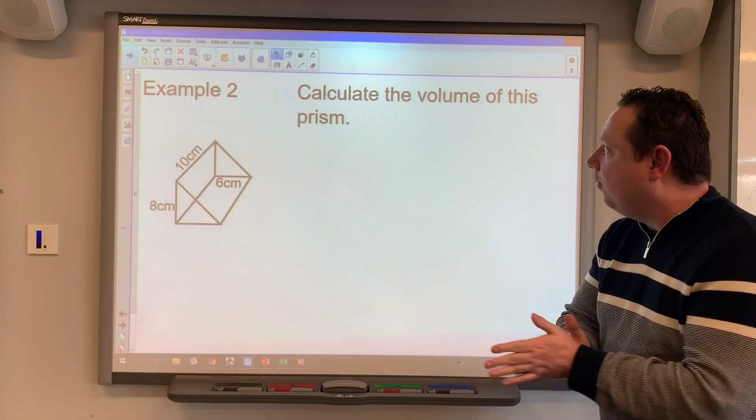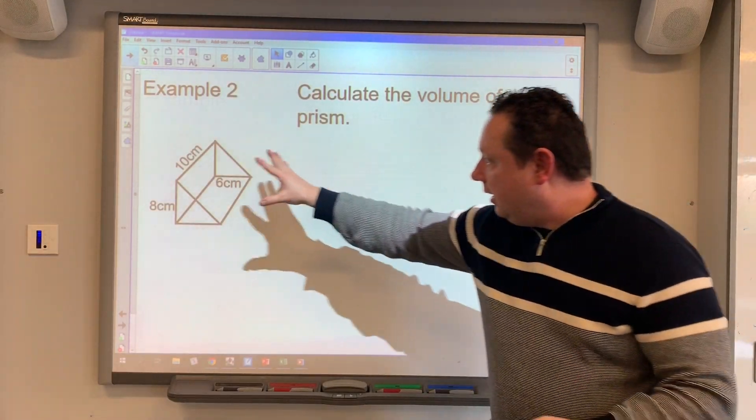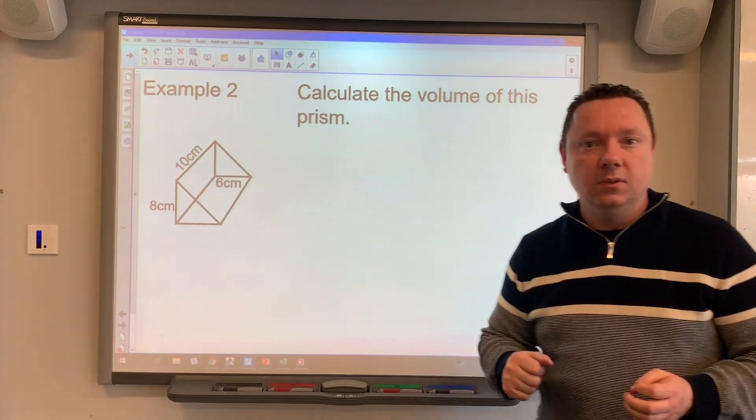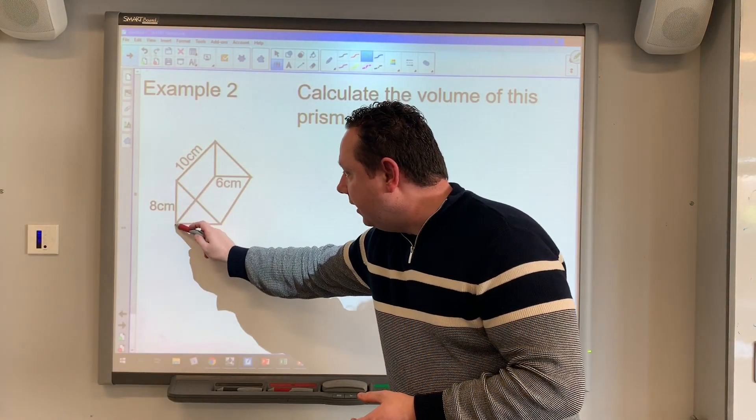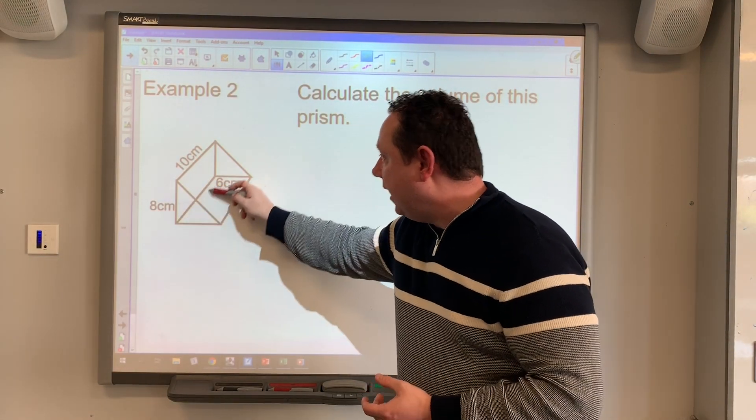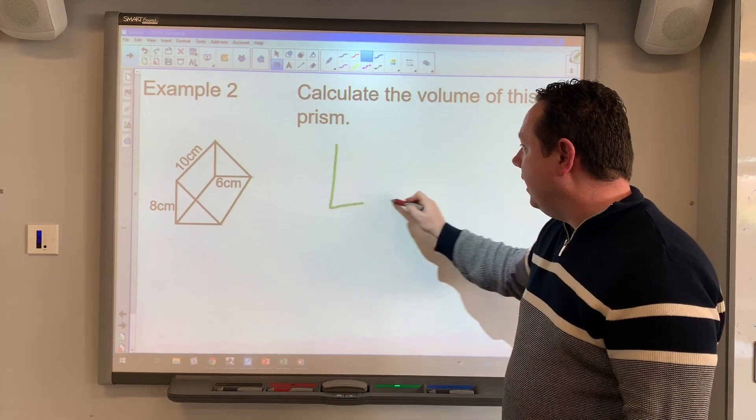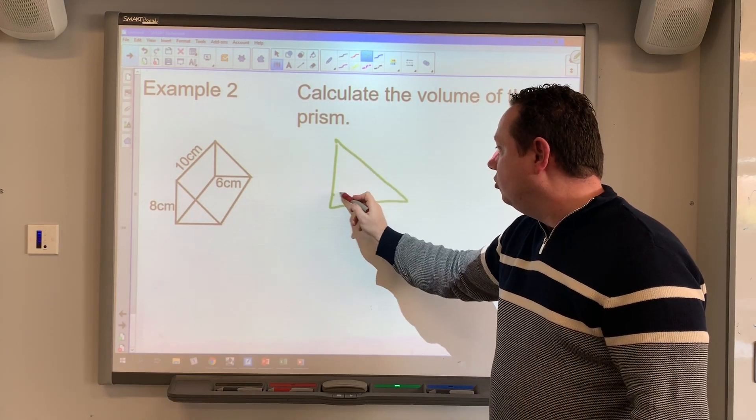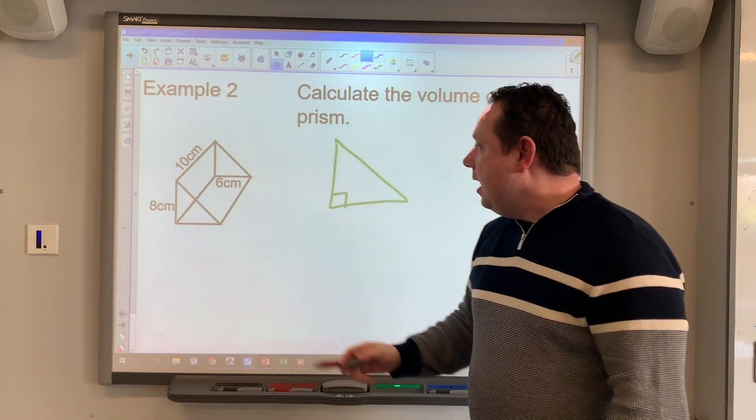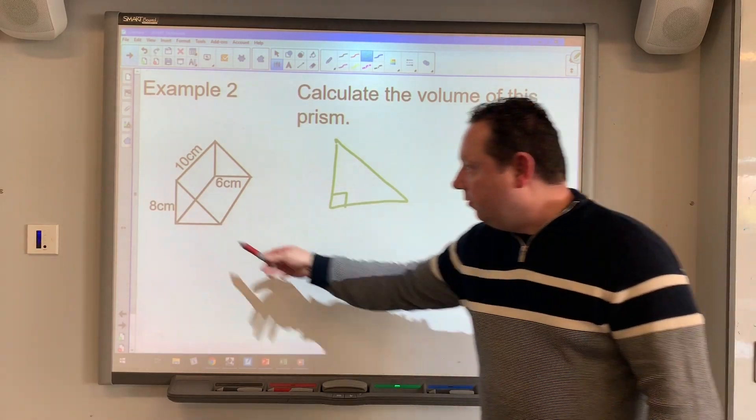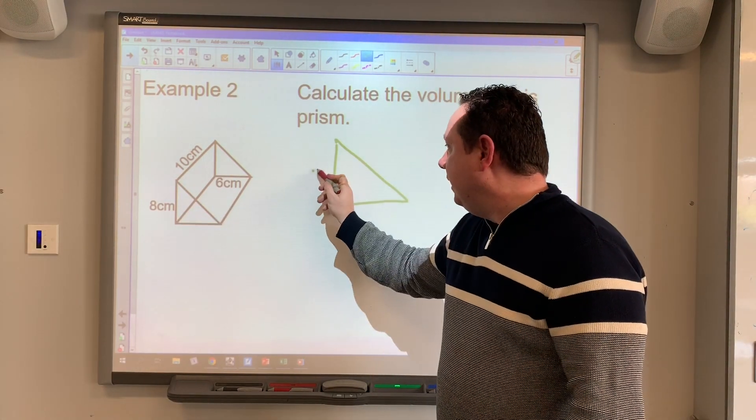Example 2 says calculate the volume of this prism, so it's not even told me it's a triangle based prism. It's saying this prism but I know that I always need to identify my cross section and there it is here, so I've now traced a triangle. It's a right angle triangle.